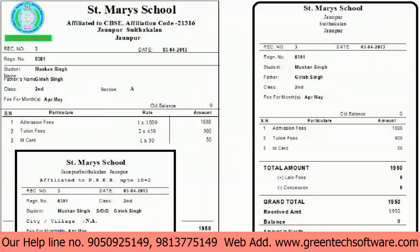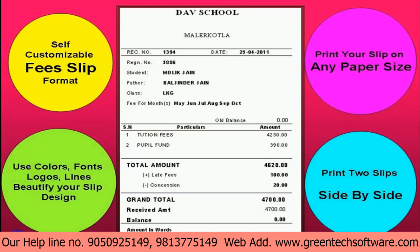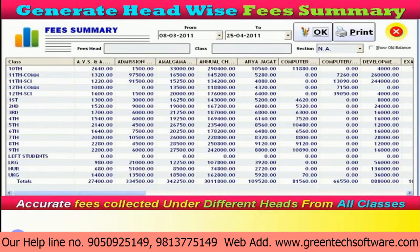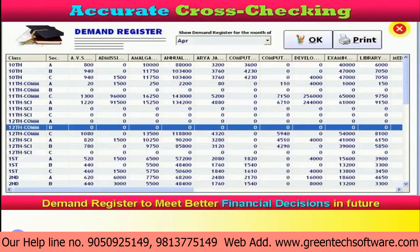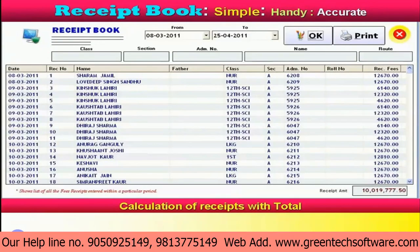हर school का अपना logo होता है जो fees slip पर चाहिए, अलग paper size चाहिए, अलग slip का design बनाना है, और कुछ schools pre-printed stationary पर printout निकालना चाहते हैं — यह सब IGNIA में user-end पर 100% possible है। IGNIA में दिए गए 'My Bill Format' के ज़रिए fee slip design करना MS Paint जितना आसान है — drag and drop interface से कोई भी fonts, colors, borders, lines use कर सकते हैं, कोई भी paper size choose कर सकते हैं, और कितने भी formats बना सकते हैं।